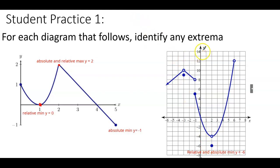Let's look at the answers. We have a relative minimum at y equals 0 — it's the bottom of a curve, lower than any point to its immediate left or right. This point up here is both an absolute max and a relative max at y equals 2: it's the highest point overall and it's higher than any point immediately to its left or right. Down here we have an absolute minimum because it's the lowest point on the graph, and since it's an endpoint it cannot be a relative extrema.